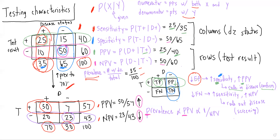Thinking about sensitivity and NPV: sensitivity is the probability of getting a positive test result given you had the disease, and NPV is the probability of not having disease given you had a negative test result. As false negatives go down, sensitivity and NPV both go up. This is why we use highly sensitive tests to rule out disease in screening — if a highly sensitive test gives a negative result, false negatives must be low, so we can trust it is a true negative.